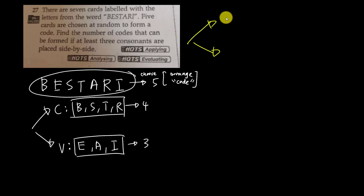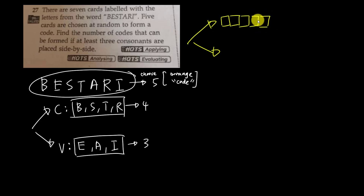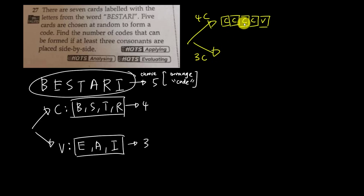First case: the five-letter code has four consonants. So we have four consonants and one vowel. I can arrange all four consonants — that's four factorial. But the vowel and the group of four consonants can swap places, so we multiply by two.